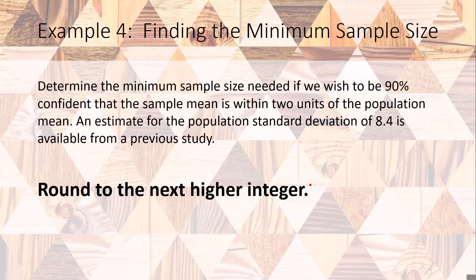We want to determine the minimum sample size if we wish to be 90 percent confident that the sample mean is within two units of the population mean. An estimate for the population standard deviation of 8.4 is available from a previous study. So we know my confidence interval is 90 percent, from that I can deduce that my critical value is 1.645. I know my population standard deviation equals 8.4 and I want my error to be 2.